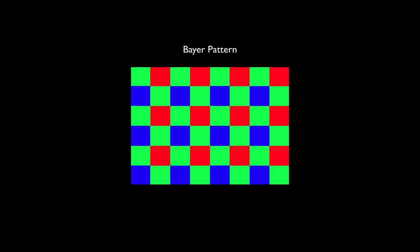The Bayer pattern has green alternating with red and blue pixels such that there are twice as many green pixels as red or blue. The digital camera records the varying brightnesses of these red, green, and blue pixels as electrical signals of varying strengths, resulting in each pixel receiving a numerical value in the raw file. These pixels only represent brightness at specific pixel sites on the chip.